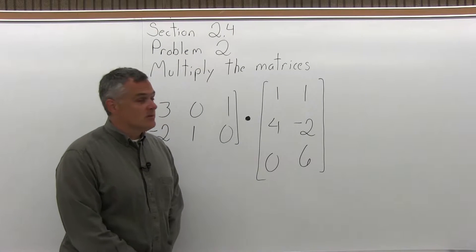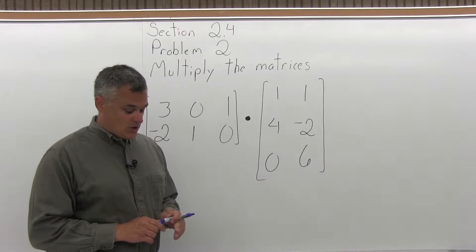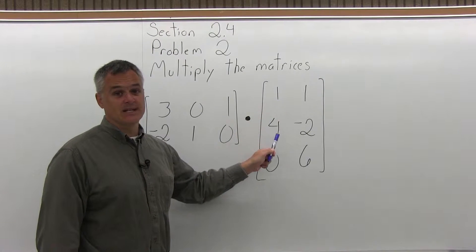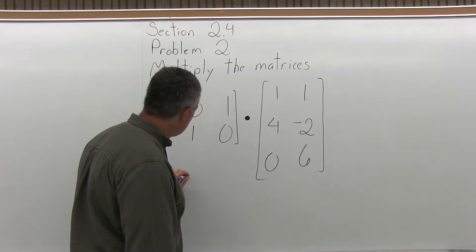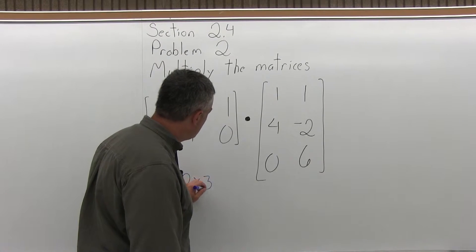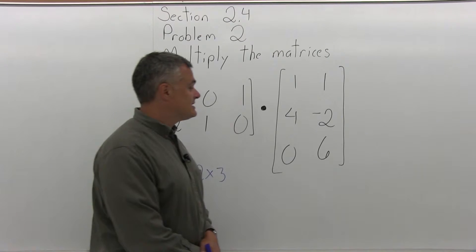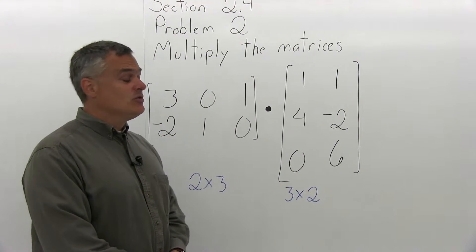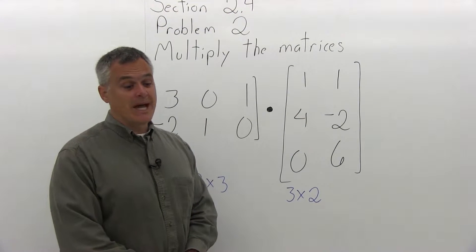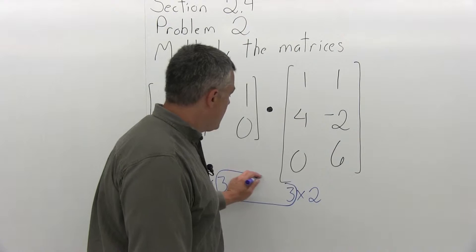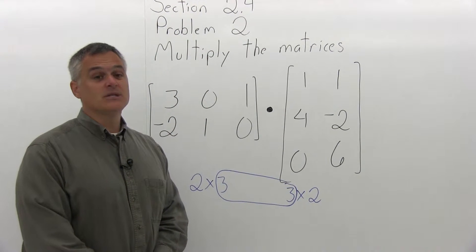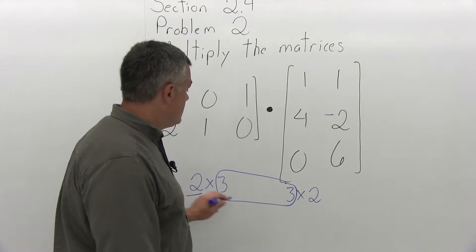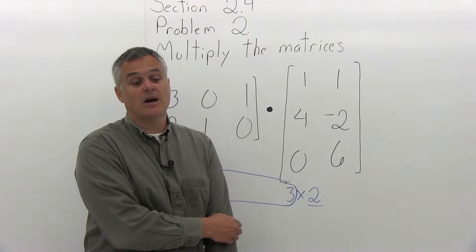The first thing we have to do is check to see if this does have a solution. To check, you want to see if the number of columns in the first matrix is equal to the number of rows in the second matrix. The easy way to do that is to write the dimensions of each matrix underneath. The first matrix is a 2 by 3 matrix because it has two rows and three columns. The second matrix is a 3 by 2 matrix because it has three rows and two columns. When you write those dimensions, the inner numbers match — that determines that there is a solution.